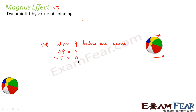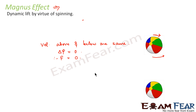No dynamic lift is observed in case of a ball which is not spinning. On the other hand, let us consider a ball which is moving in air as well as spinning. When the ball spins, it drags the air above it along with it. Therefore the velocity of air above the ball is greater than the velocity of air below the ball.